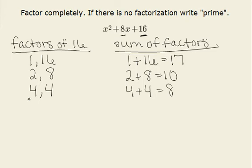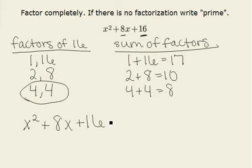So the two numbers I want to use here are 4 and 4 because they are both factors of 16, and the sum of these factors is 8, which is exactly what I wanted. So therefore, x squared plus 8x plus 16 equals the product of x plus 4 times x plus 4. And we are done.